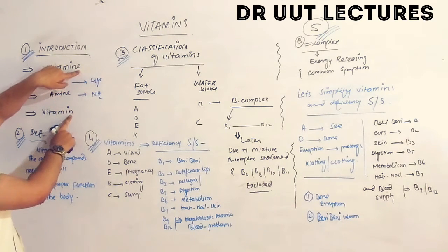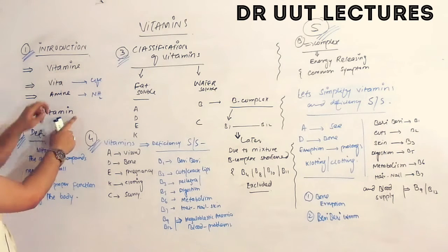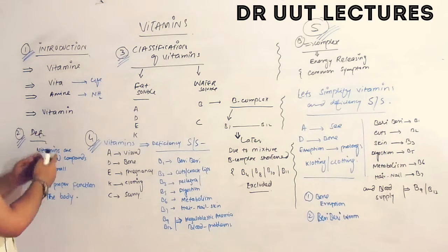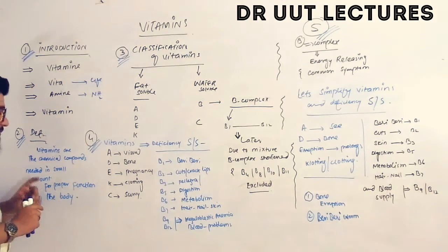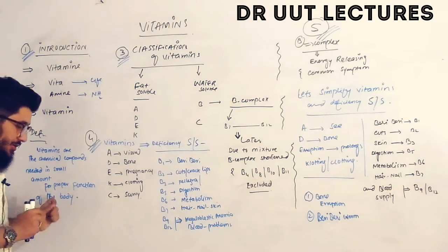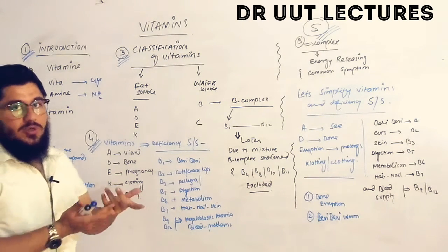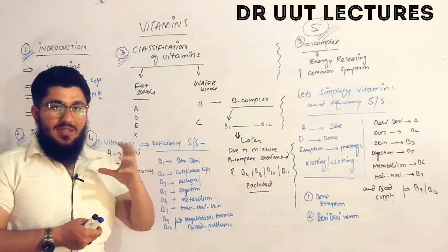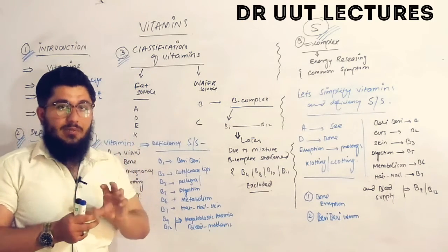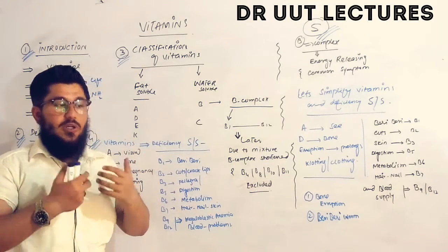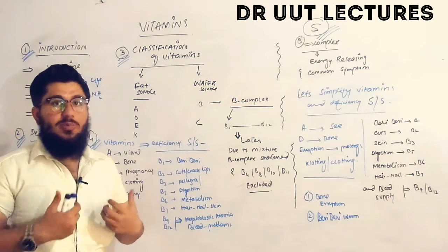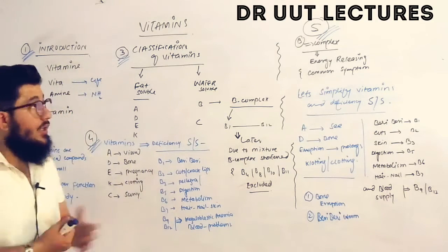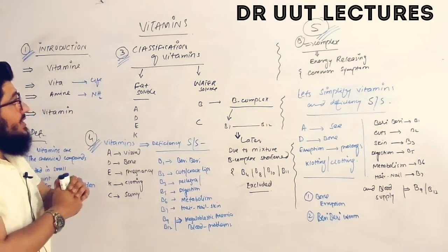Vitamins are now defined as chemical compounds needed in small amounts for the proper functioning of the body. When you take these in sufficient quantities, your body performs well. That is the definition of vitamins.